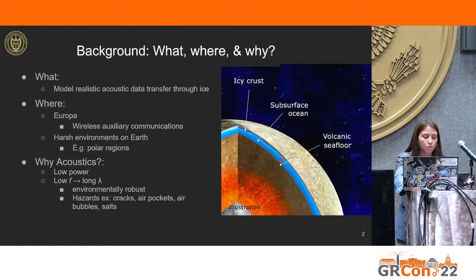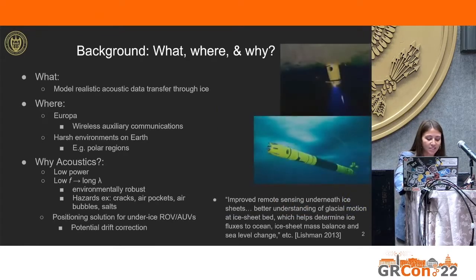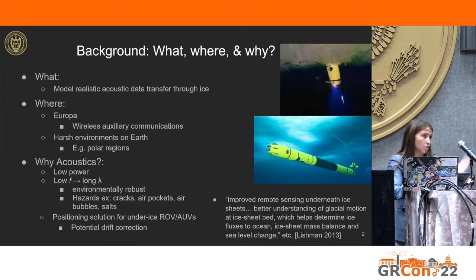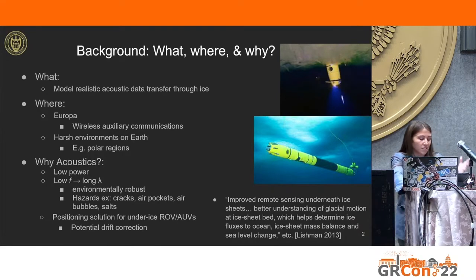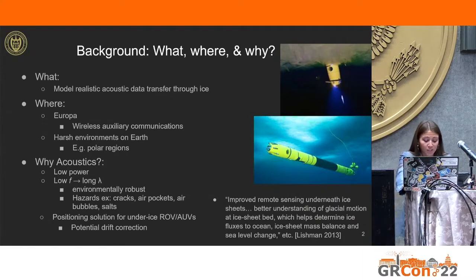ROVs and AUVs are remote-operated vehicles or autonomous underwater vehicles. This is Icefin, the ROV of the lab I work in. This robot gets put through a borehole in Antarctica and swims around underneath the ice taking scientific data. One issue that Icefin and all other under-ice vehicles encounter is that there is no GPS signal through ice, leading to navigational or positional drift problems. So a low-power wireless acoustic system that could communicate through both ocean water and ice has exciting additional applications, not just outer planet ones.